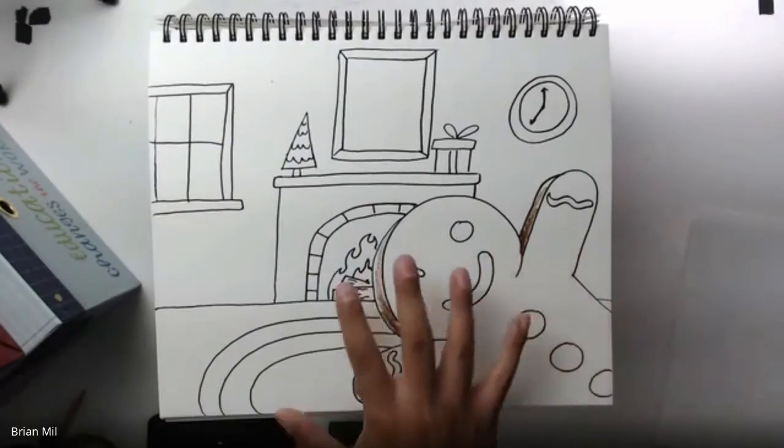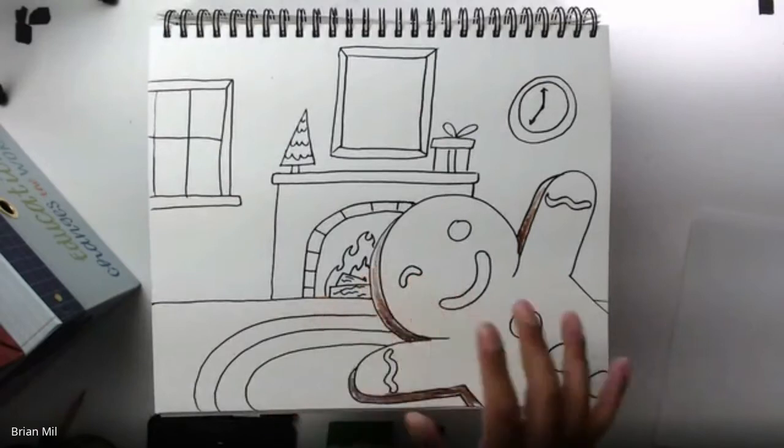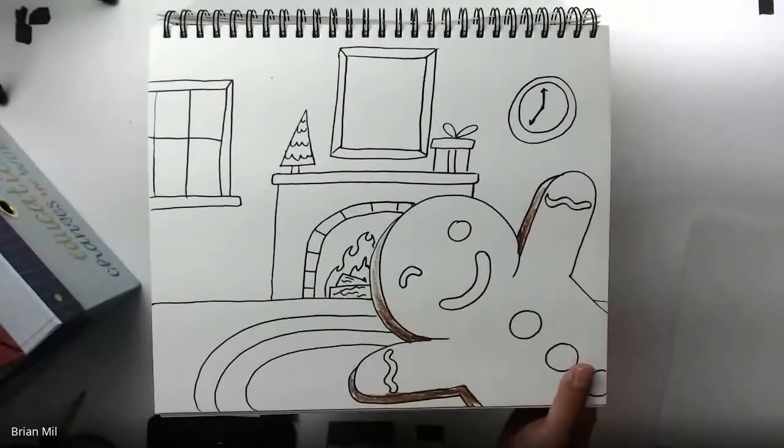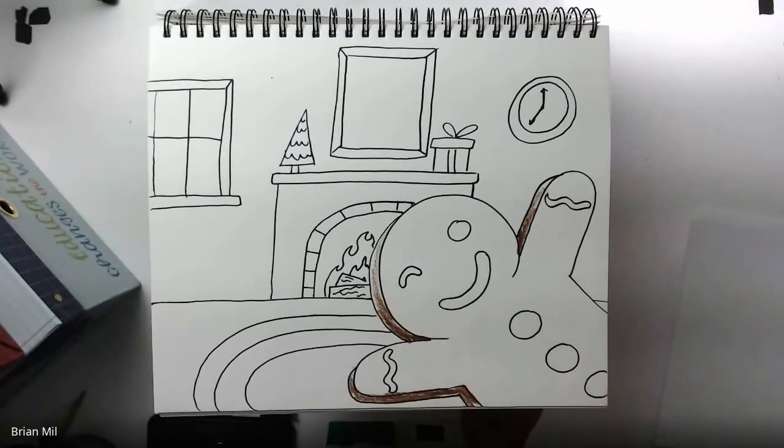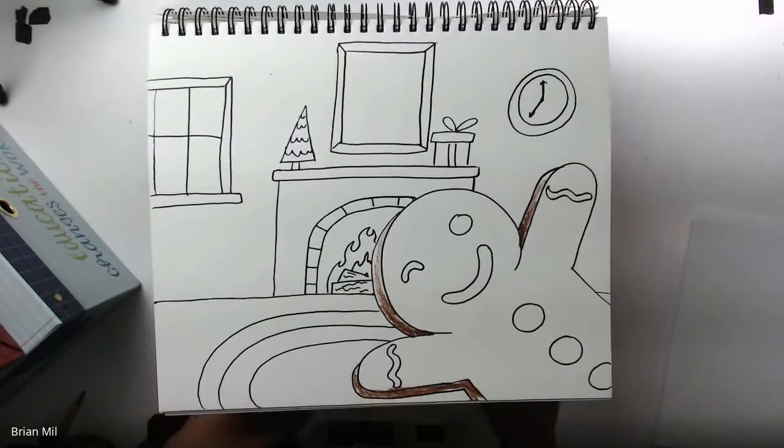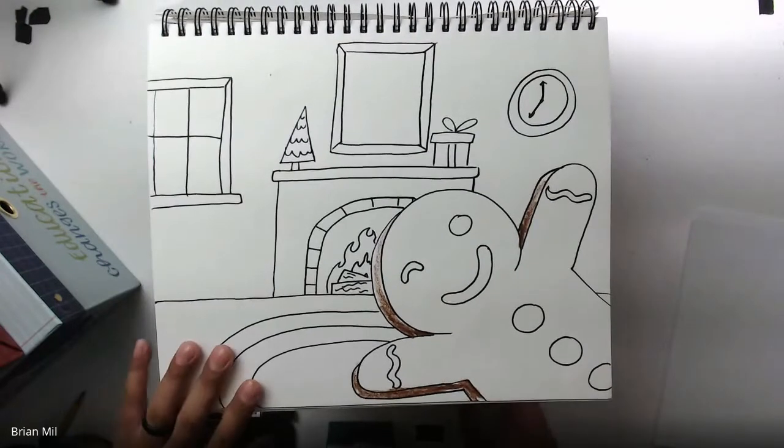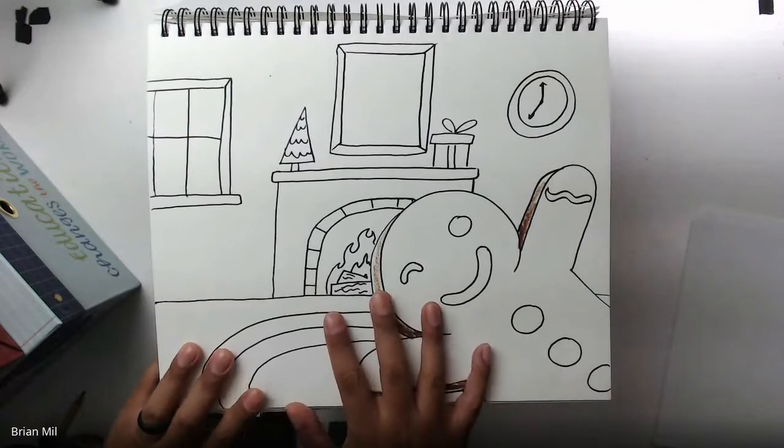All right, so over here is an example I did with the last class. What we did was a gingerbread guy, and he's photobombing the picture, and that's exactly what we're doing. Now, before we get started on a blank sheet of paper, I just want to explain to you guys your options.